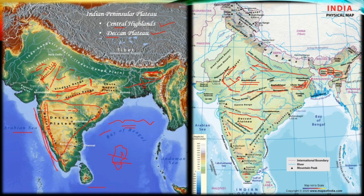The major passes through the Western Ghats are: Thal Ghat, which links Nashik to Mumbai; Bhor Ghat, which links Mumbai to Pune; and Palghat, which connects Kerala to Tamil Nadu, linking Kochi to Chennai. Western Ghats are higher than Eastern Ghats — the elevation of the Western Ghats is 900 to 1600 meters, while the average elevation of the Eastern Ghats is around 600 meters.